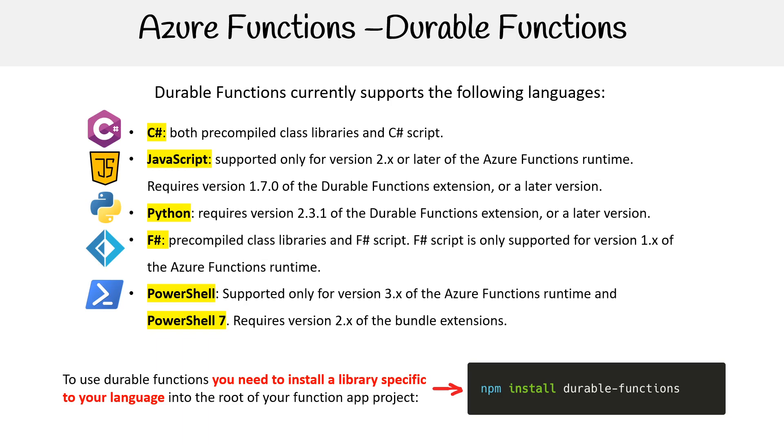To use durable functions, you need to install a library specific to your language in the root of your function app project, such as running npm install durable-functions.